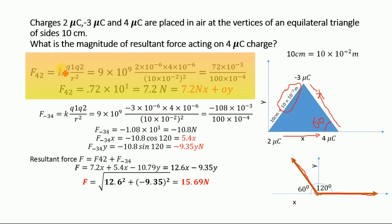This is Coulomb's law, where K is the constant with value 9 × 10⁹. Q₁ is 2 µC, Q₂ is 4 µC, and R is 10 cm = 10 × 10⁻² m. R² is therefore (10 × 10⁻²)². Solving this, we get F₄₂ = 7.2 N. This force is along the x-axis, so in component form it is 7.2 N along x and 0 along y.